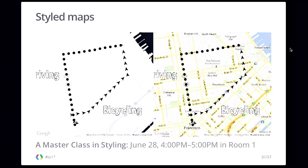One thing used extensively during this presentation is styled maps. On the left is a styled map; on the right is the default Google Maps styling. While the default has a lot of useful information, sometimes you want your data to be the hero of your map. You can use styled maps to make the base map more subdued, providing context without swamping your data. There will be a master class in styling tomorrow from 4 to 5 in room 1.